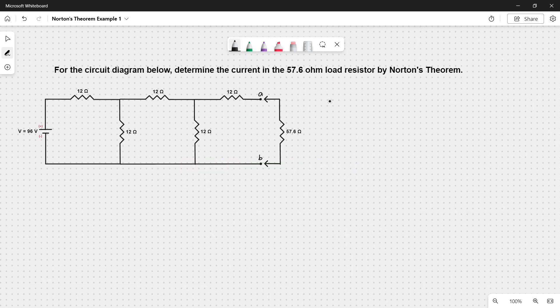For the circuit diagram below, determine the current in the 57.6 ohm load resistor by Norton's theorem. This theorem is closely related to Thevenin's equivalent circuit, because we only need to transform the circuit from voltage source to current source and place the open circuit resistance parallel from the current source.